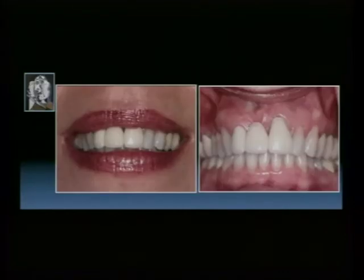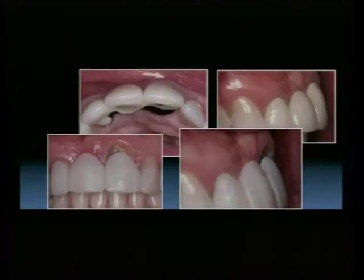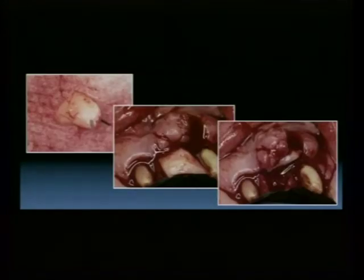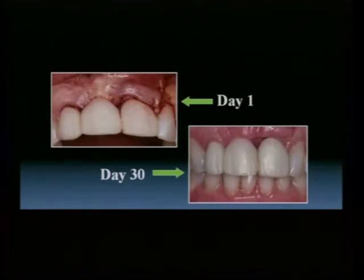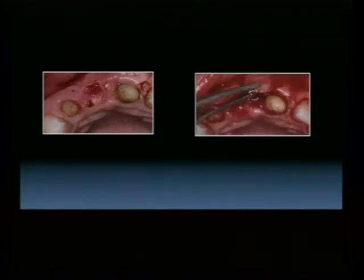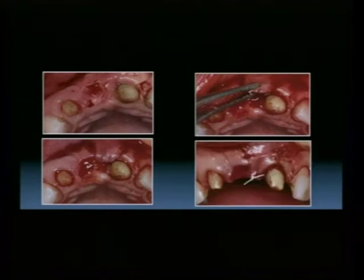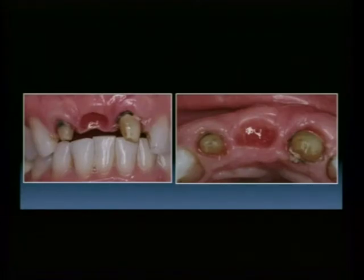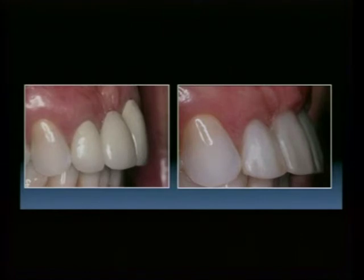Another case presents not only with the alveolar ridge deficiency but recession of the pontics. This will be handled similarly — the restorative dentist will be asked to prepare the teeth to ideal tooth lengths to allow for root coverage on the previously restored tooth, root preparation, connective tissue graft on the abutment tooth, and soft tissue ridge augmentation in the pontic space. After healing of the first surgery, we secondarily do a pedicle graft into the papillary area with connective tissue.